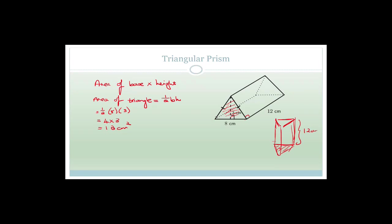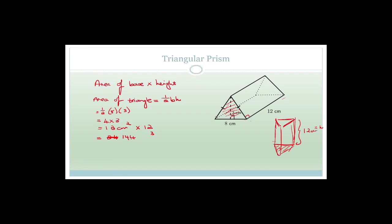Now we have to multiply by the height. This is the height, but it's lying down. When we put it up on its end, this is the height. So multiplying 12 centimeters squared by 12 gives 144 cubic centimeters. That is the volume of the triangular prism.